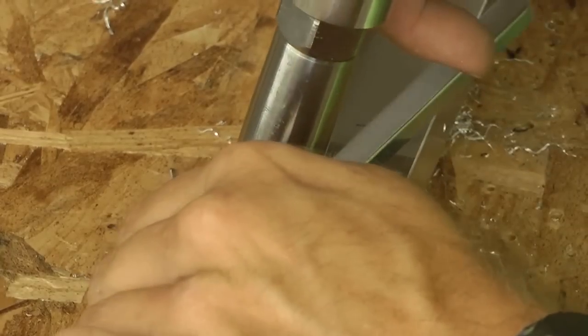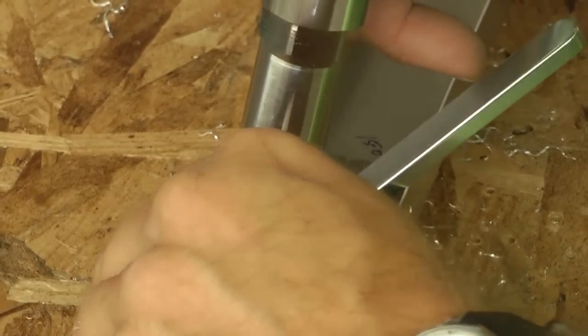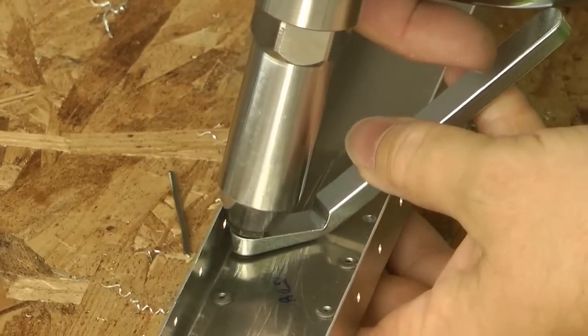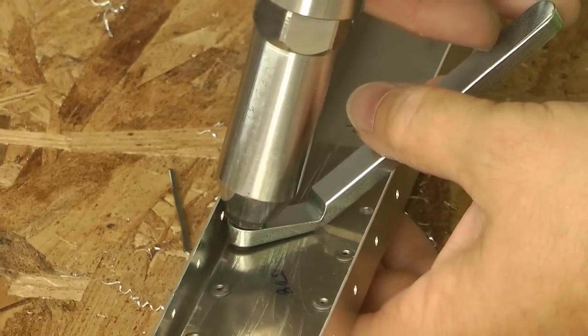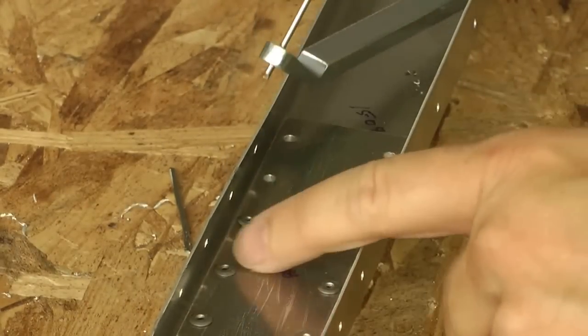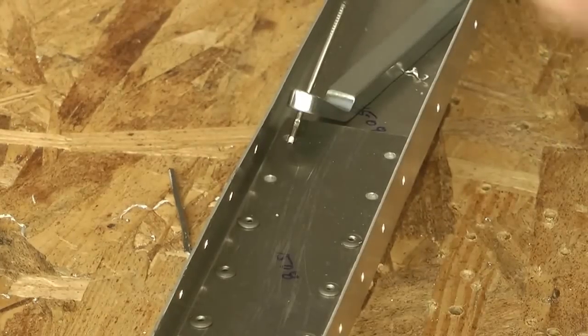and bend the metal just a little bit, there we go. And now I've got a nice flush contact, and the rivet goes in nice and straight.